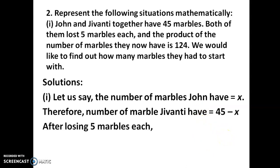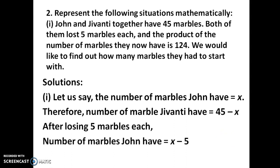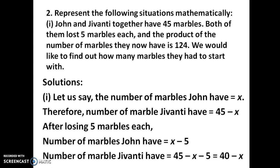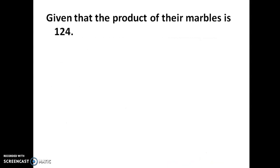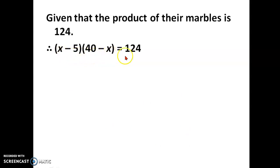After losing 5 marbles each, John will have x minus 5 and Jivanti will have 45 minus x minus 5, which simplifies to 40 minus x. Given that the product of their marbles is 124, we write: (x minus 5) into (40 minus x) equal to 124.